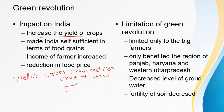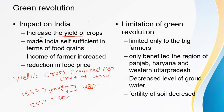For example, during 1950, from one hectare of land a farmer was producing around 100 kg of rice. But in 2020, one farmer can produce 200 kg of rice from one hectare of land. So the yield of the land increased. The yielding capacity of land increased because of HYV seeds and modern technology.